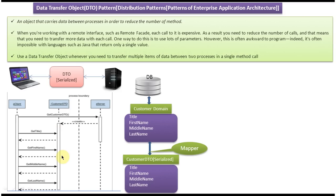The client will get the title, first name, middle name, and last name from the customer DTO object. Suppose this data transfer object concept is not there — then for getting title, first name, middle name, and last name, the client has to make four separate calls to the server. But since we have the DTO object, the client has to make only one call instead of four, reducing the number of calls to the server and improving performance.